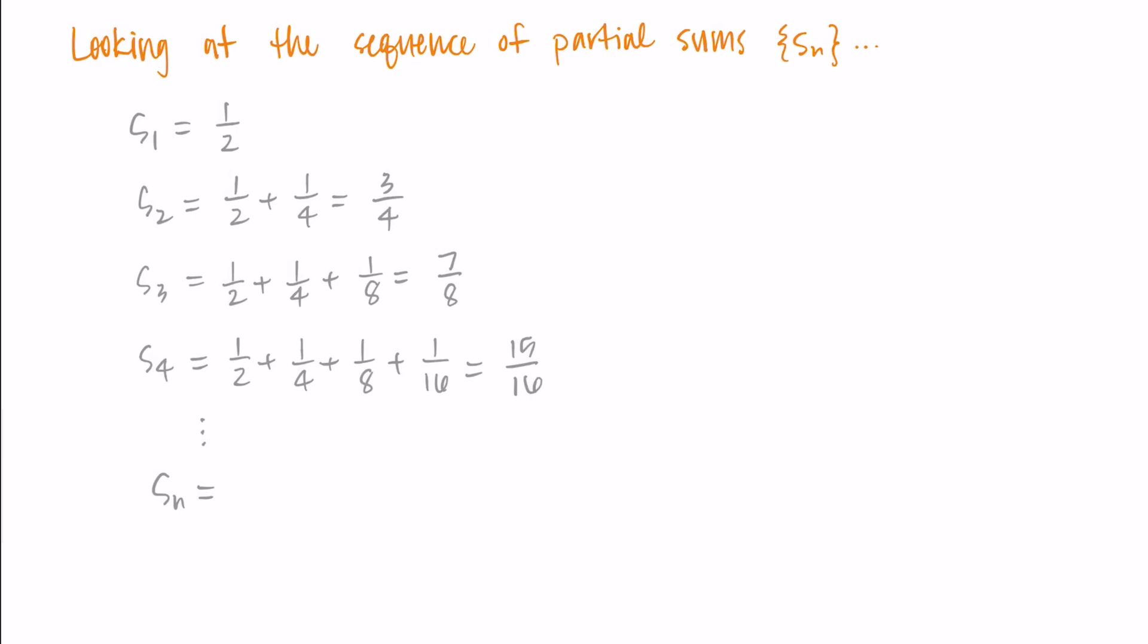So for each of these partial sums I have 2ⁿ in the denominator, where n is the number of the partial sum we're on, and then the numerator is just one less than the denominator. So I'm going to write that the nth partial sum is equal to (2ⁿ - 1)/2ⁿ to represent this relationship.